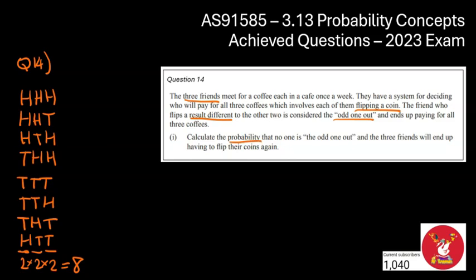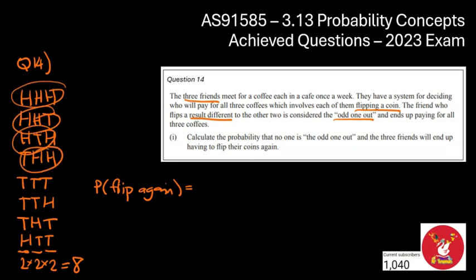So actually answering the question, so find the probability. So the probability that they need to flip again is going to be equal. So there's eight different options in total. And just a reminder, each of these are as likely as the other. So we don't even need to think about the probability of each outcome. We just know that there's eight different ones in total. Of these eight, how many had no odd one out? Well, it was the three heads up here and the three tails here. So those would require a reflip. So it's going to be two out of eight, which is going to be 0.25.